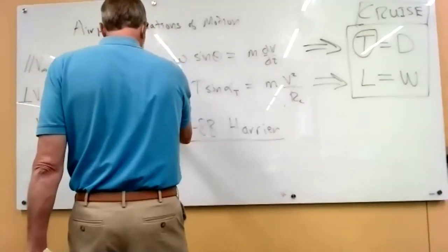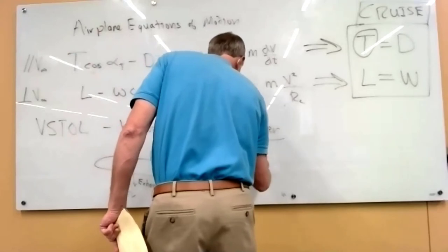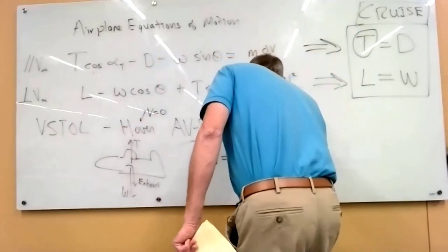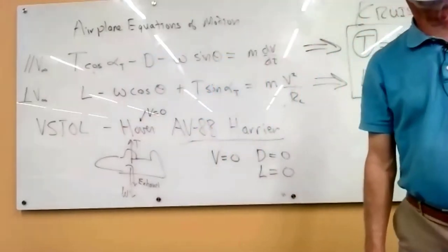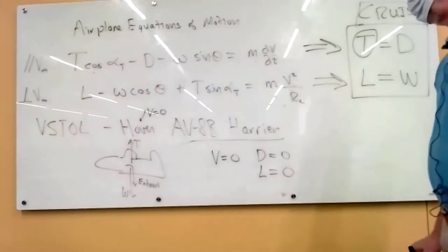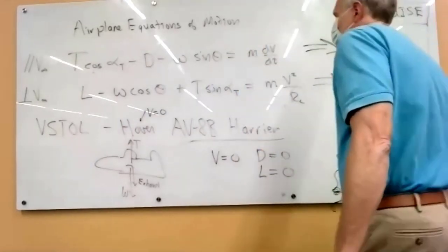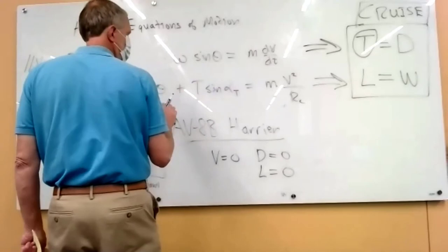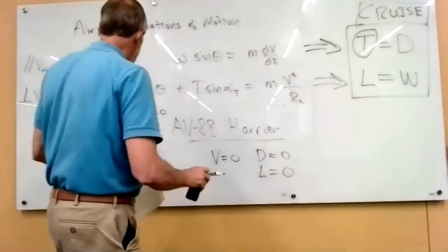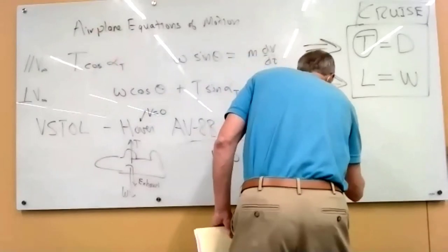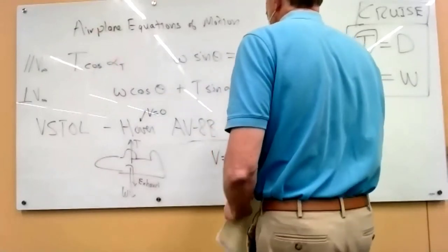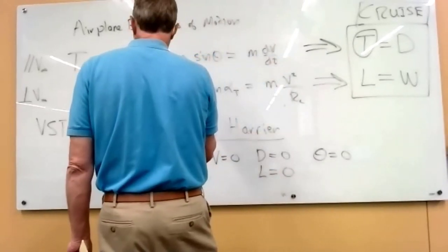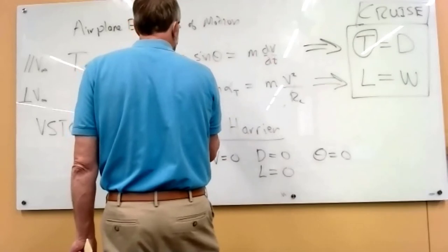So there is no air speed. So the drag is zero because it's not moving. And you're not getting any aerodynamic lift for the same reason. There's no air flowing over the wing. So those get knocked out. And we're still saying we're in level flight, although we're not flying. So theta is zero.